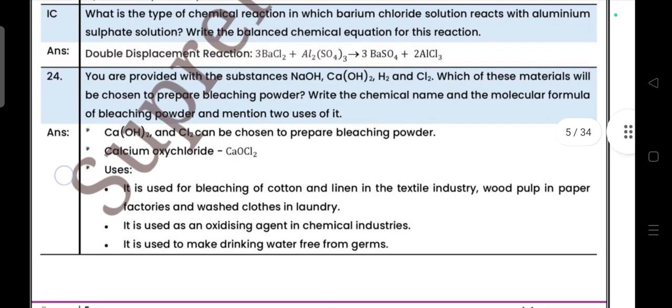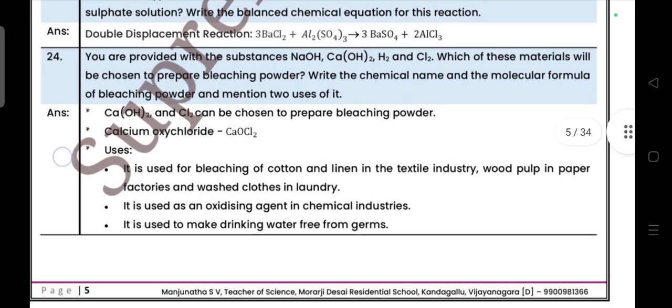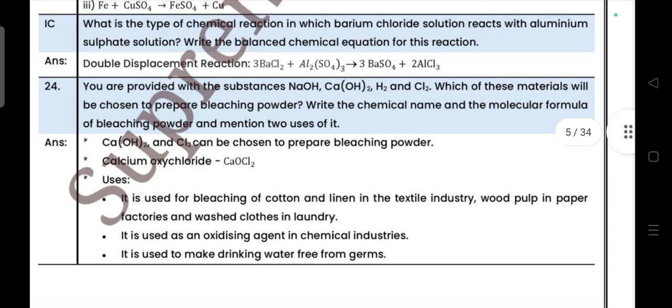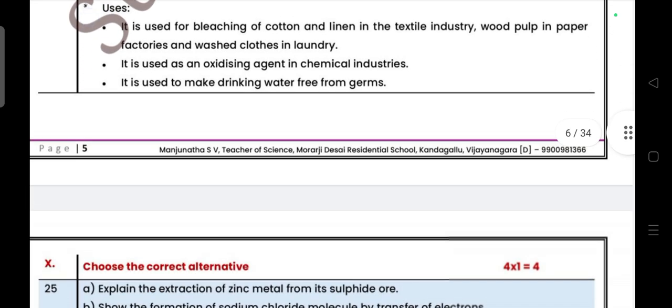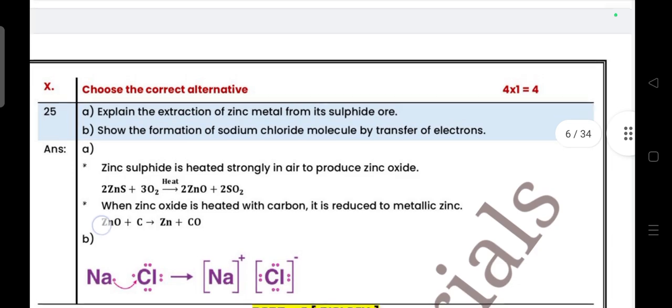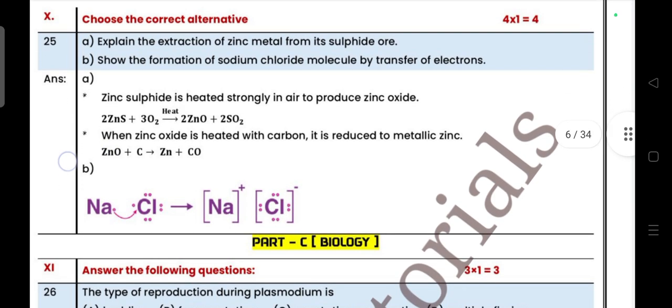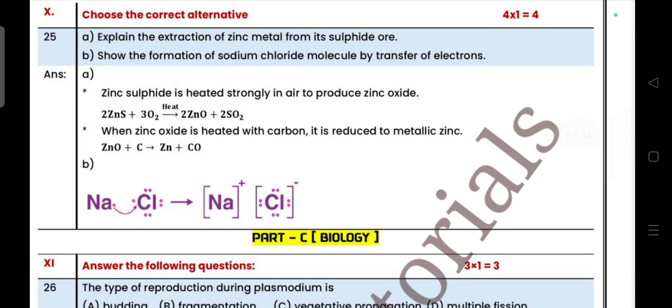Next, you are provided with the substances NaOH, Ca(OH)2, H2, and Cl2. Which of these materials will be chosen to prepare the bleaching powder? Write the chemical name and molecular formula of bleaching powder and mention two uses of it. Calcium hydroxide, CaCl2. It is used for bleaching of cotton and linen in the textile industry, wood pulp in paper factories and washed clothes in laundry. It is used as an oxidizing agent in chemical industries. It is used to make drinking water free from germs.